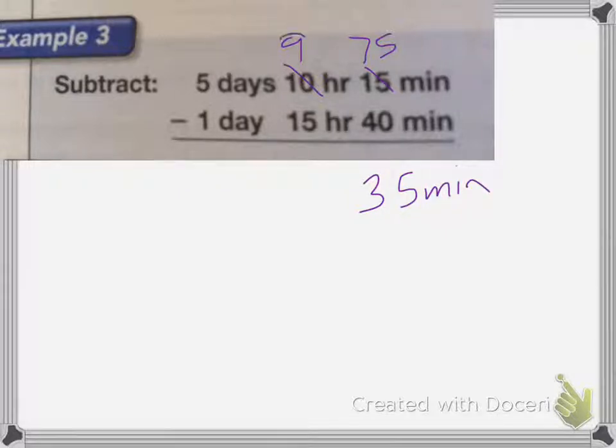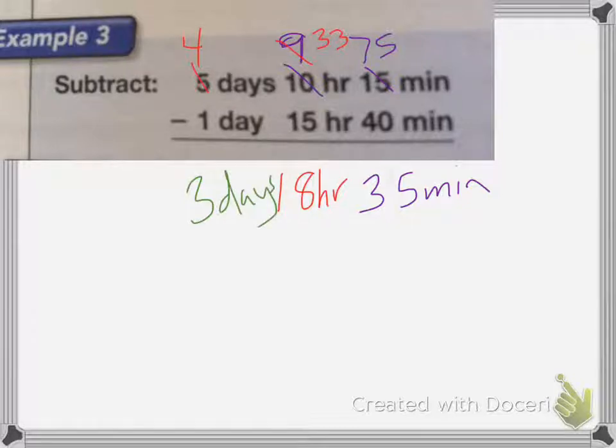Now with hours, I cannot subtract 15 hours from the 9 hours. So I need to convert 1 day into hours. Well, there's 24 hours in 1 day. So I'm going to change the 9, add 24 hours, and get 33 hours. 33 minus 15 is 18 hours. Now I'm just going to subtract the 4 minus 1, which is 3 days. So I end up with 3 days, 18 hours, and 35 minutes.